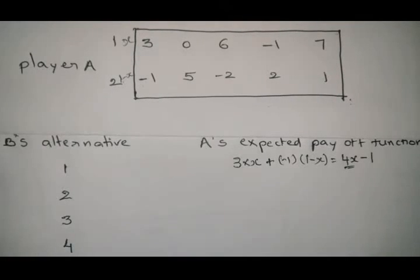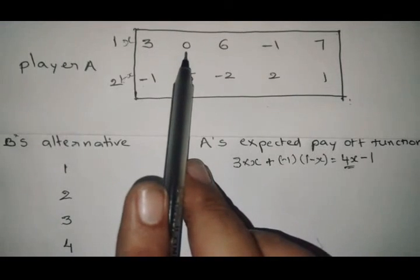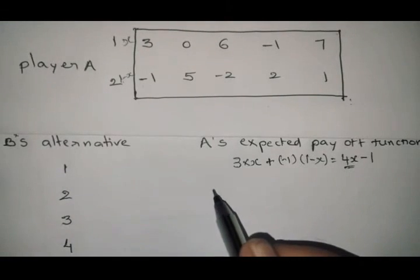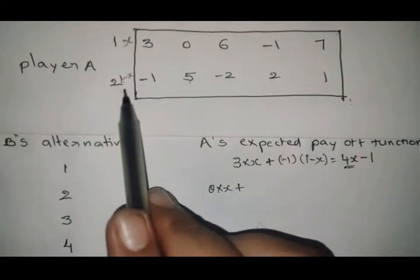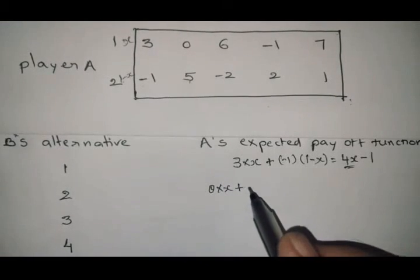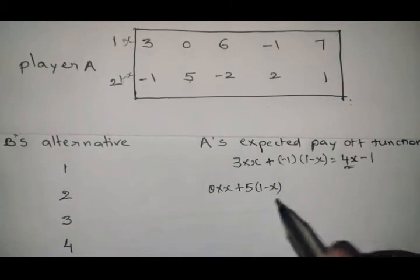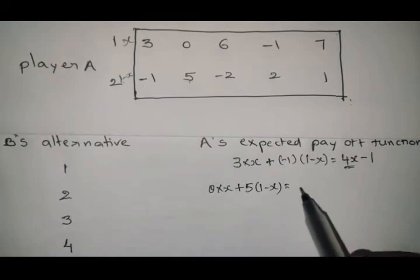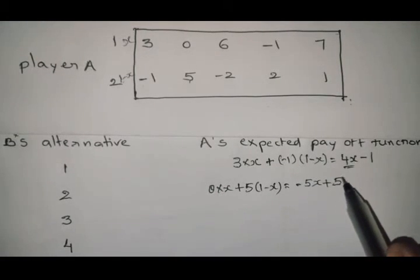For B's second alternative: 0·x + 5·(1-x) = -5x + 5. This is the gain function for alternative 2 of player B.